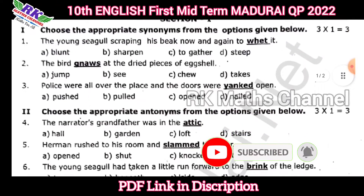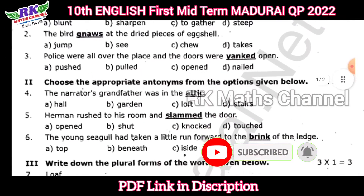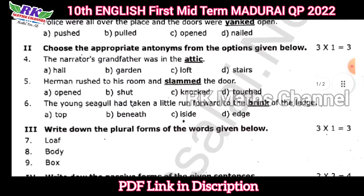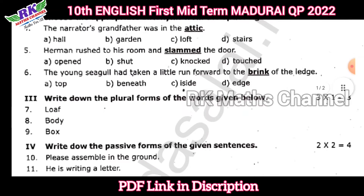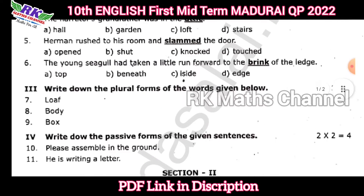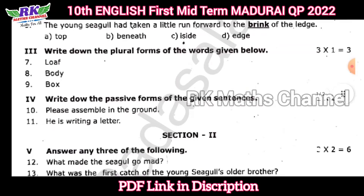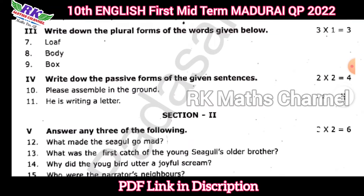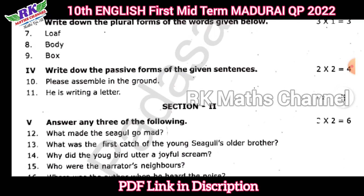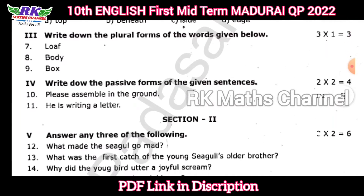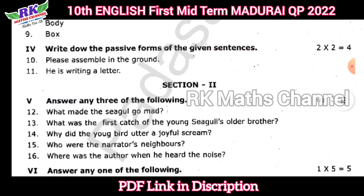Synonyms are 3 marks, antonyms are 3 marks. Next, plural forms are 3 marks. Next, passive form: 4 marks.